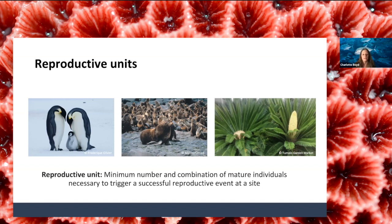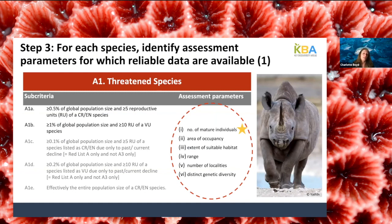Ideally we would always use the number of mature individuals, as this provides the most direct information on population distribution. But the KBA standard is designed to be flexible to enable identification for biodiversity elements with more limited data. If estimates of mature individuals are not available, several proxy parameters can be used: area of occupancy, extent of suitable habitat, range, and number of localities. For some species criteria, distinct genetic diversity can also be used as an assessment parameter, though this is not intended to serve as a proxy for population size.